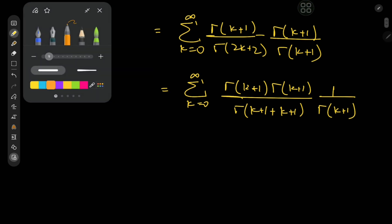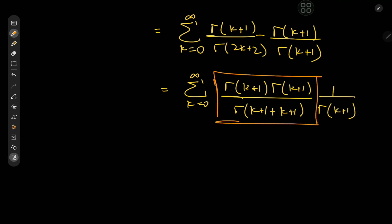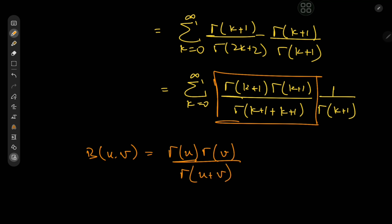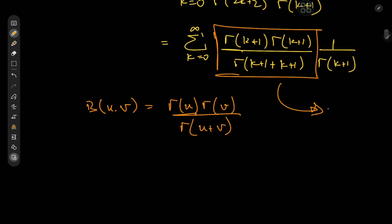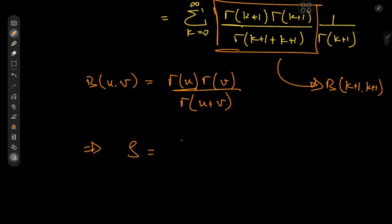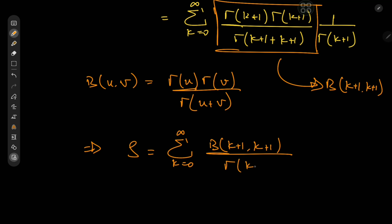Notice here that we can invoke the beta function. Recall that the beta function with complex arguments u and v can be expressed in terms of the gamma function as gamma u times gamma v divided by gamma u plus v. So what we have here is in fact the beta function at k plus 1 and k plus 1. This implies that the sum s is in fact the sum over k from 0 to infinity of beta k plus 1, k plus 1, divided by gamma k plus 1.